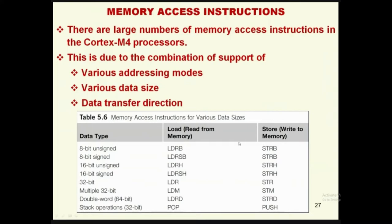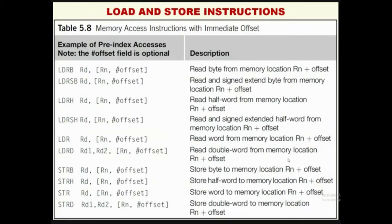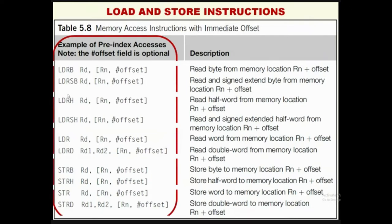Memory access instructions with immediate offset: the memory address is calculated from a base register Rn plus an offset. LDR Rd, [Rn, #offset] loads register Rd from the memory location pointed by Rn plus offset. LDRSB Rd, [Rn, #offset] reads a sign-extended byte from the memory location Rn plus offset. Similarly for half word, signed half word, and double word — LDRD has two destination registers from the same offset. For stores: STRB is 8-bit, STRH is 16-bit, STR is 32-bit, STRD is 64-bit.